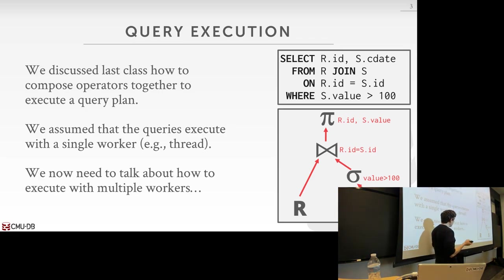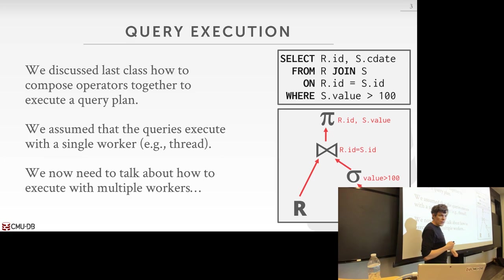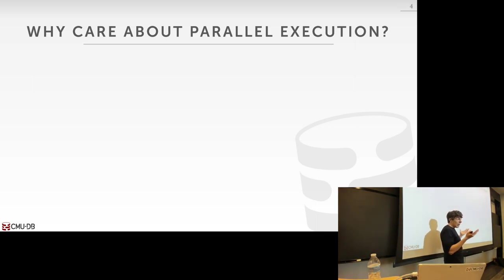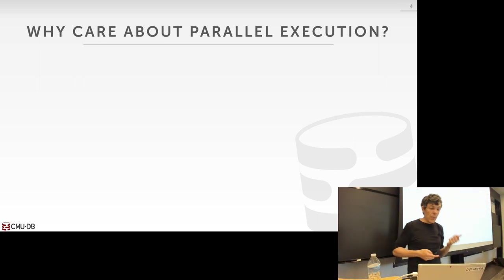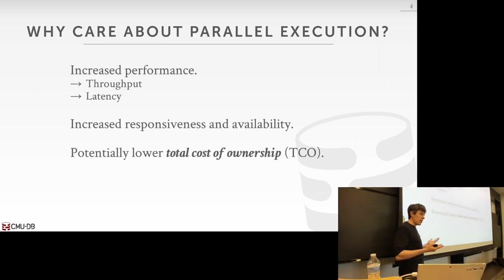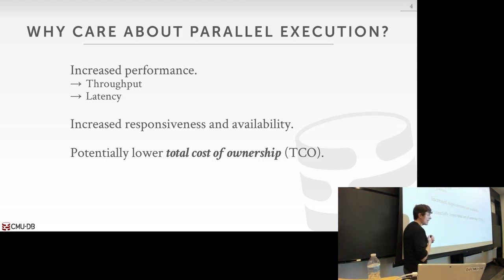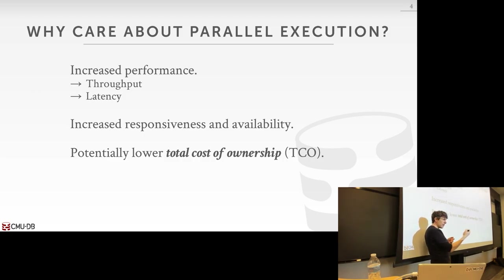Today we're going to talk about how we actually execute queries in parallel. It should be obvious why you'd care about parallel execution — in the modern era, CPUs and GPUs have a lot more cores available to us. The benefit we get from supporting parallel execution is obviously better performance — better throughput, meaning more queries per second or more data processed per second — and also better latency, meaning the time to execute a single query can be cut down.